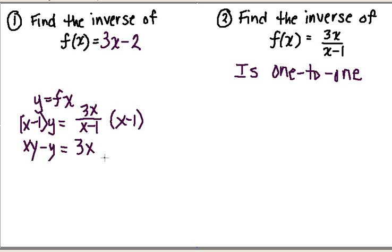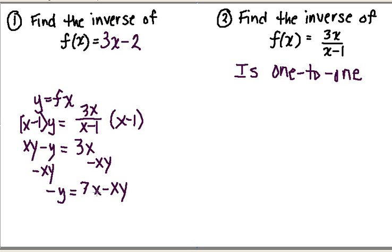Now I want to isolate all my x's on one side and all my y's on the other. So I'm going to subtract xy from both sides. I get minus y is equal to 3x minus xy. Over here, I can factor out an x, so I get 3 minus y is equal to minus y.